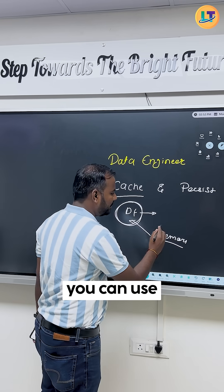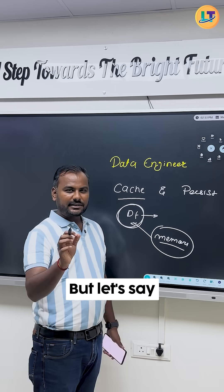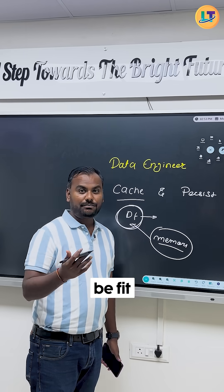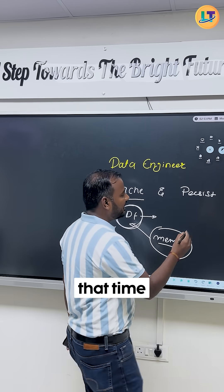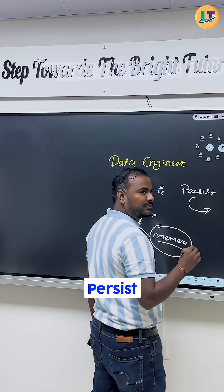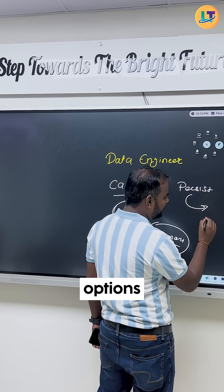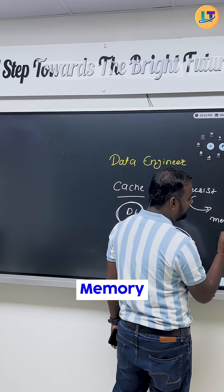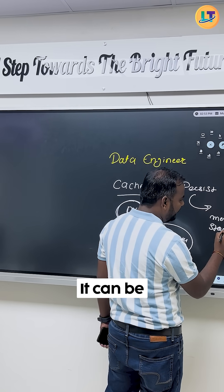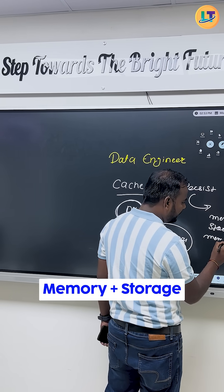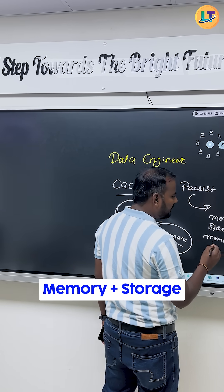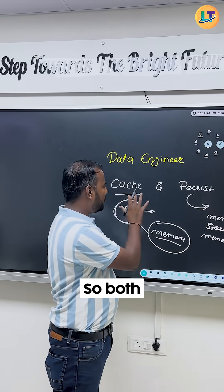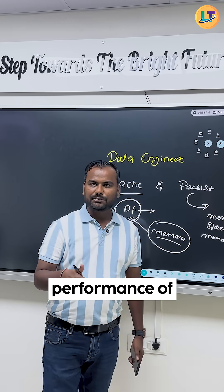When your data can fit into memory, you can use cache. But if you have a DataFrame which is quite bigger in size and cannot fit into memory, you use persist. Persist has multiple options — you can store data in memory, in storage, or a combination of memory plus storage, and there are serialized and deserialized options as well. Both are mainly useful to increase the performance of your Spark job.